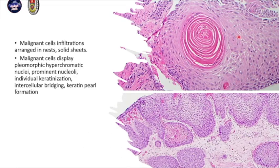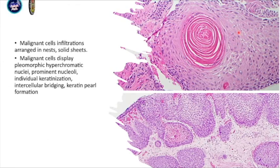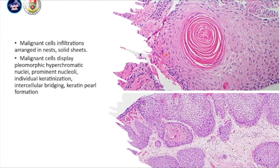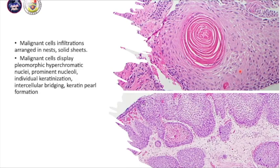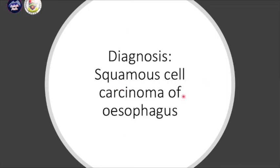Looking more closely, there is intercellular bridging between the malignant cells, resembling spider feet. In some tumors, keratin pearl formation is also present. These features — keratin pearls, individual keratinization, and intercellular bridges — are characteristic of well-differentiated squamous cell carcinoma. The diagnosis for this case is squamous cell carcinoma of the esophagus.